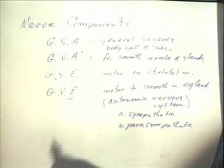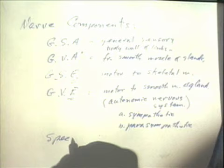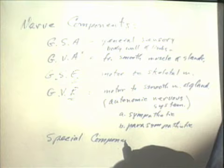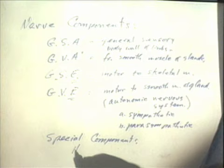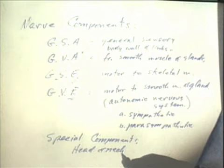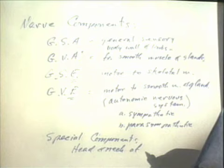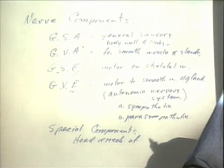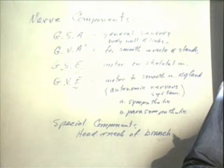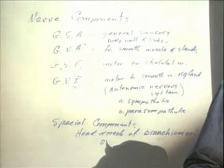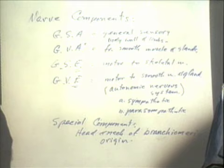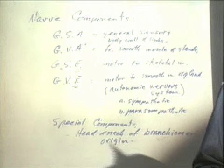There are also what are called special components. These refer specifically to areas of the head and neck of what we call branchomeric muscle origin — in other words, from the branchial arches — and they are also associated with special sensory functions in the head area.